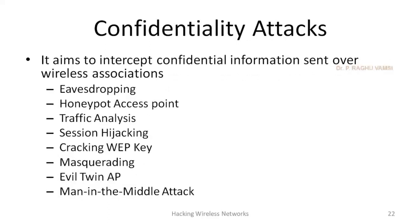Next are confidentiality attacks, which aim to intercept confidential information sent over wireless associations. The most common method is eavesdropping. Another attack is the honeypot access point, created by attackers — especially in shopping areas — by setting up fake access points using well-known restaurant names. Users try to connect these access points, and when clients connect without a password, they are actually connected to the hacker's honeypot access point.